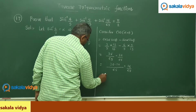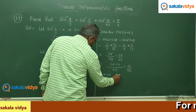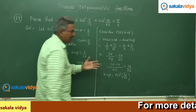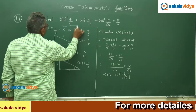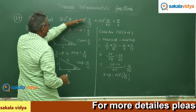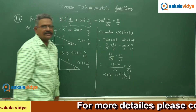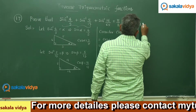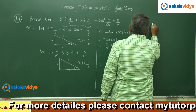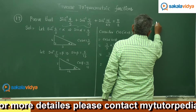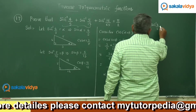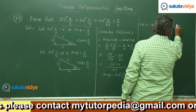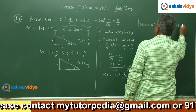That means alpha plus beta equals cos inverse of 16/65. So we have the value of these two terms. These two terms are replaced by cos inverse 16/65. Now let us consider the LHS: sin inverse 4/5 plus sin inverse 5/13 plus sin inverse 16/65.